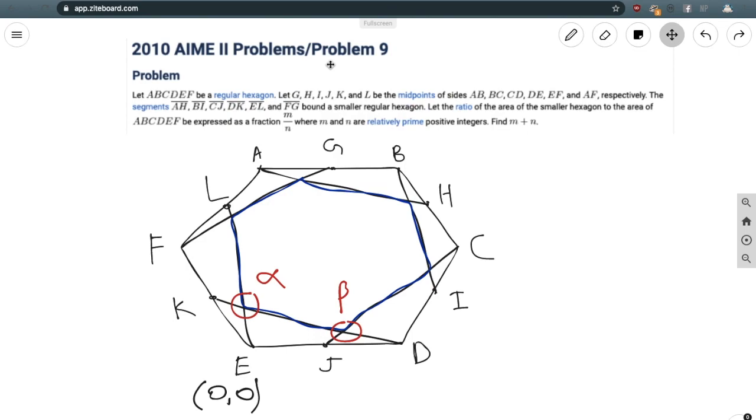Hey guys, welcome back to On the Spot STEM. Today, as per fan request, we'll be tackling 2010 AIME II Problem 9. The problem reads: Let ABCDEF be a regular hexagon, and let G, H, I, J, K, and L be the midpoints of sides AB, BC, CD, DE, EF, and AF respectively. The segments AH, BI, CJ, DK, EL, and FG bound a smaller regular hexagon. Let the ratio of the area of the smaller hexagon to the area of ABCDEF be represented as a common fraction m/n, where m and n are relatively prime positive integers. Find m + n.